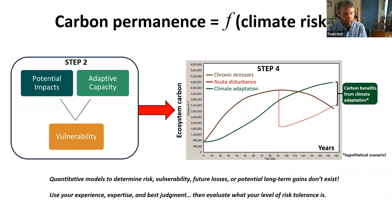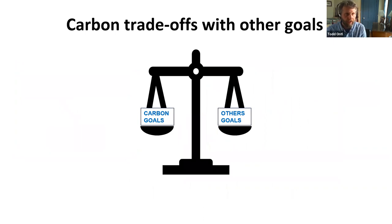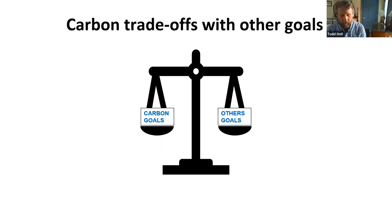These questions and considerations and evaluations that I hear people making are really important, and we don't have any model to just put a number on it. And of course, there is the additional consideration that there are other things we're trying to manage for — possibly, in addition to carbon, we might be thinking about habitat for an endangered species, where that habitat preference might mean a removal of carbon to achieve those conditions. So those are all really key considerations in thinking about these adaptation actions.